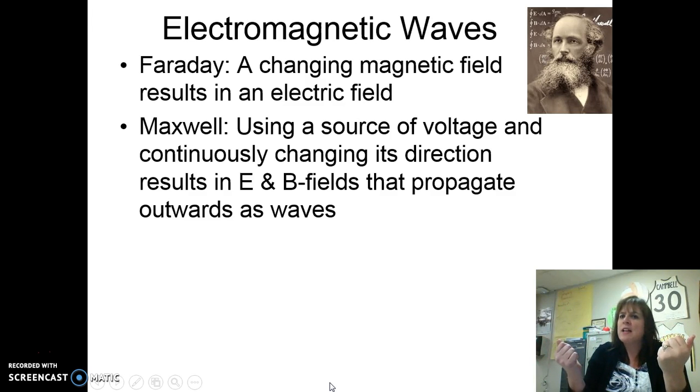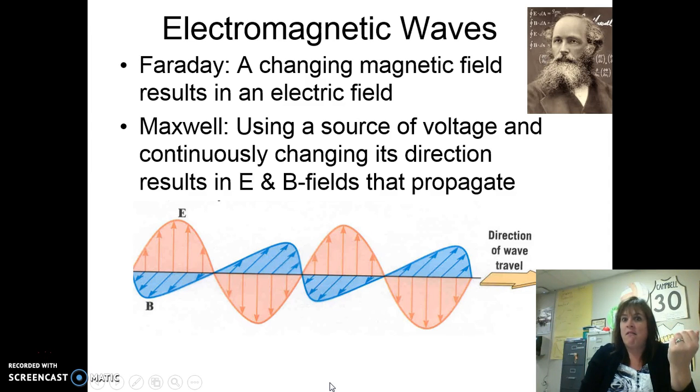Well Maxwell was wondering if we could do the reverse, if we could use a source of voltage and continually change its direction, the polarity of it, could we get electric and magnetic fields? What do you know? We can. These are called electromagnetic waves.